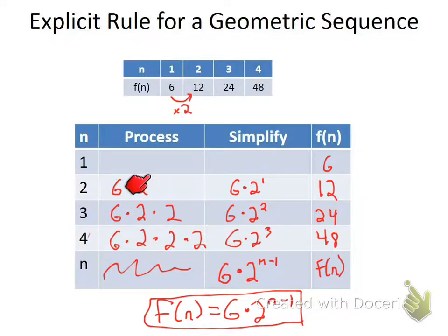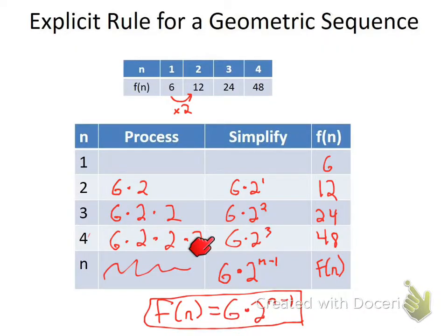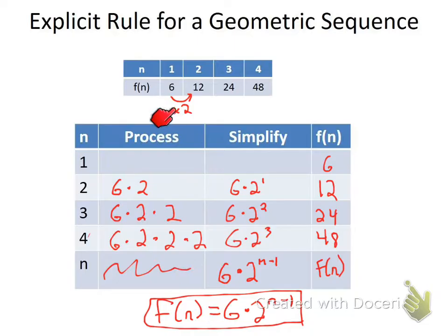The key takeaway: we don't want to draw the table every time. We want to jump directly from the sequence to the rule. Identify the first term — it goes here — and multiply by the common ratio (which we established as 2) to the n minus one power. First term times common ratio to the n minus one power.